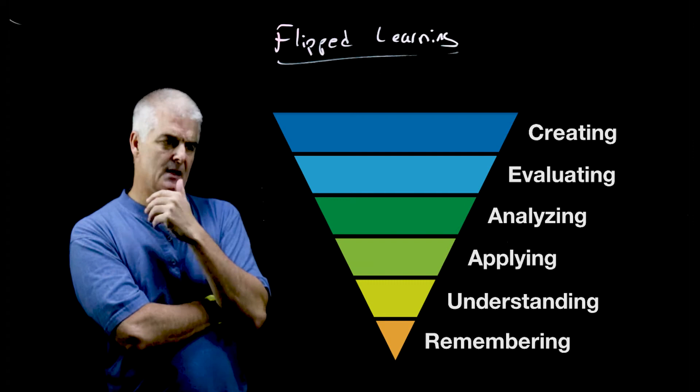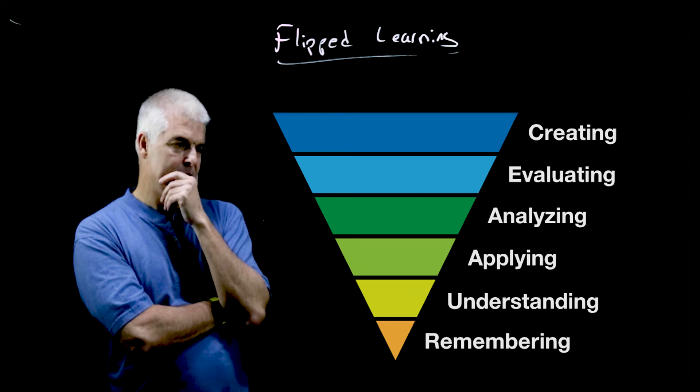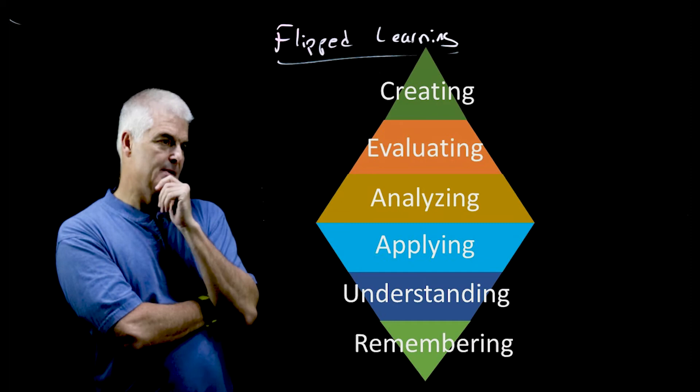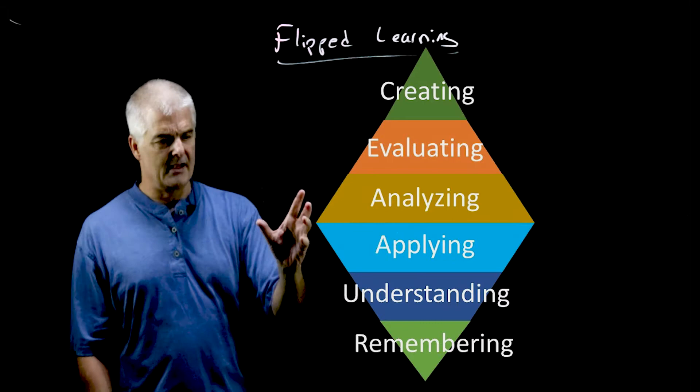So what if we flip Bloom's Taxonomy? What if instead there was less class time devoted to the easy stuff and the hard stuff is where we focused in on? In fact, I think honestly, the best picture of Bloom's Taxonomy is this picture where it's the diamond. I think it's unrealistic to do the inverted pyramid. I think what you want to do is spend the bulk of your class time usually in the middle of Bloom's Taxonomy.